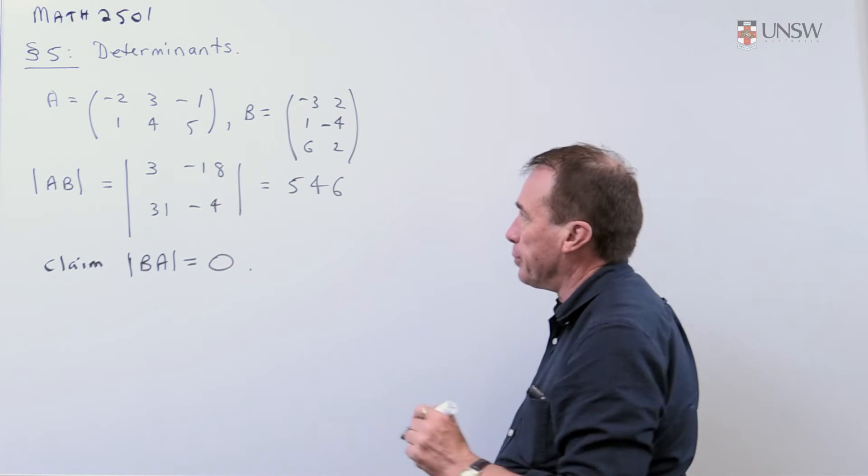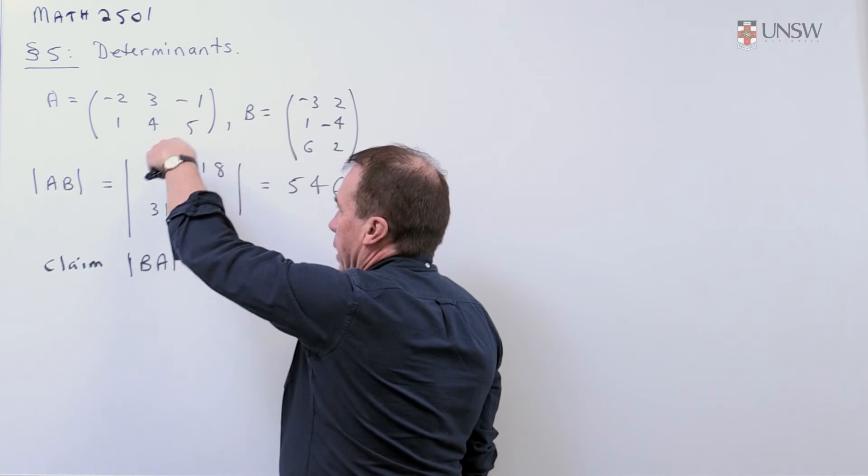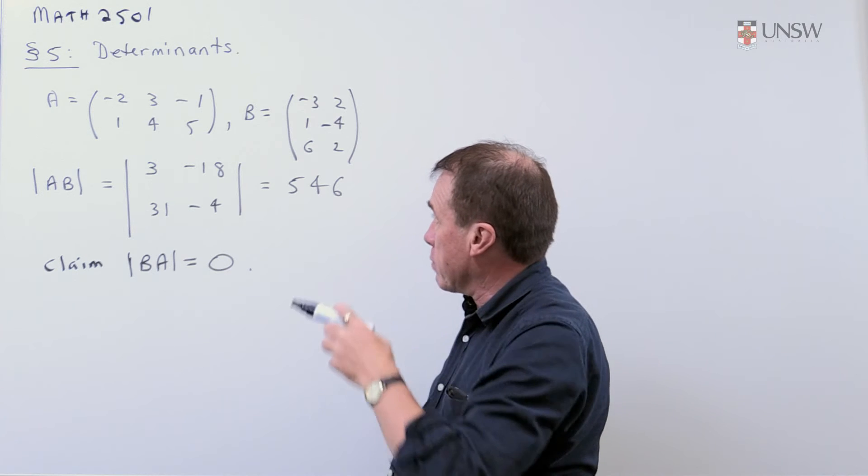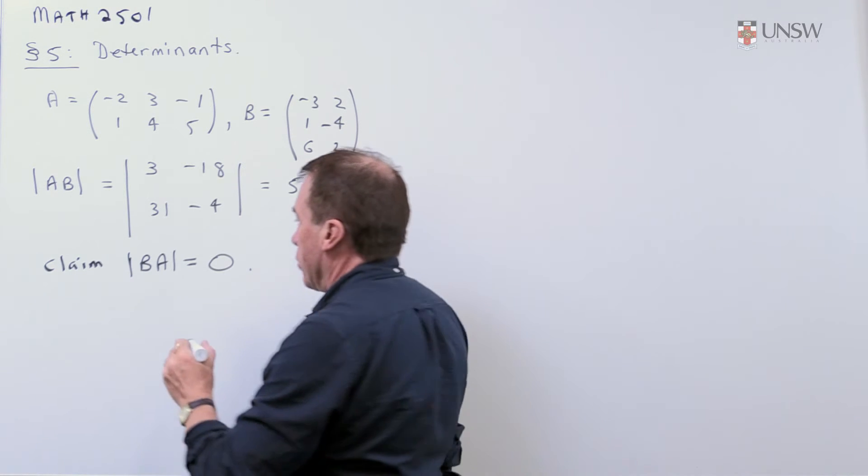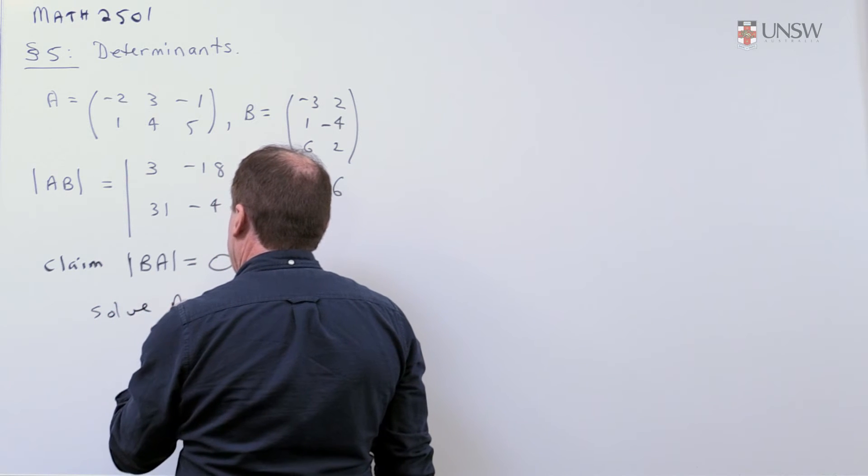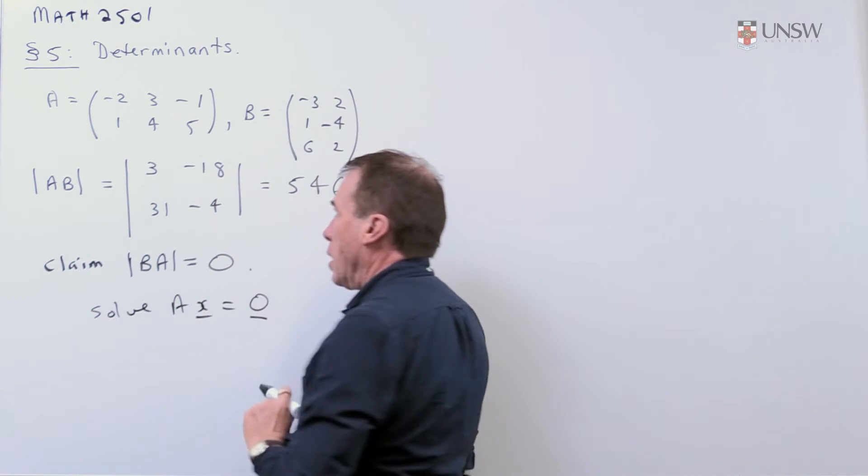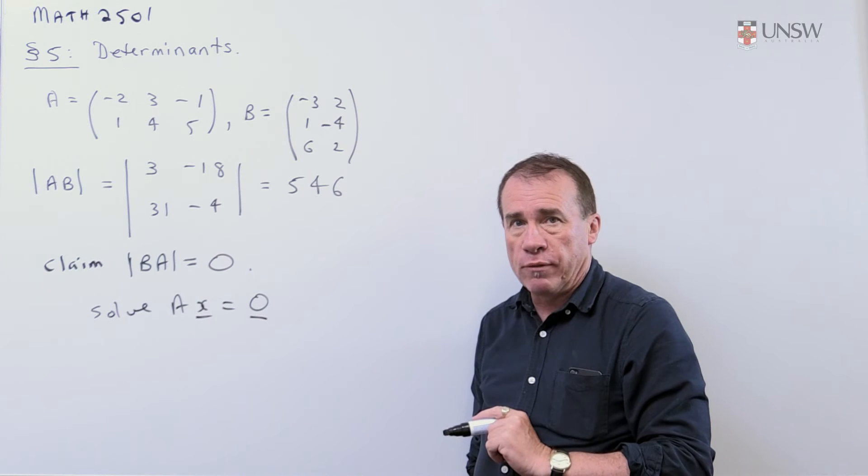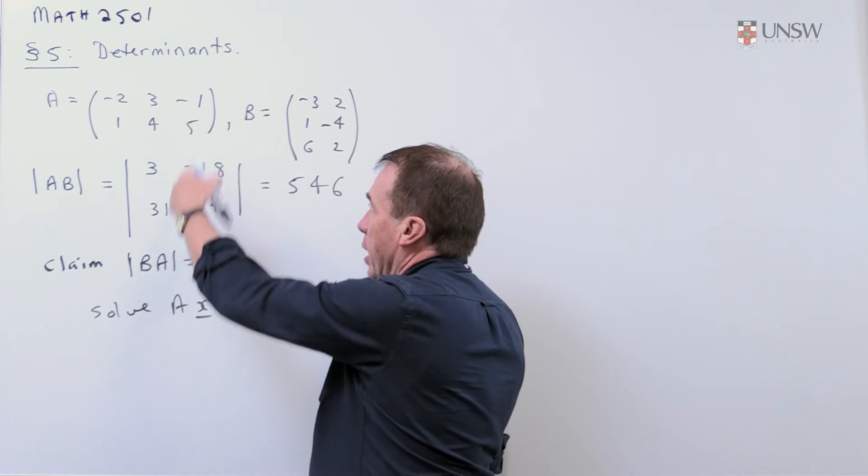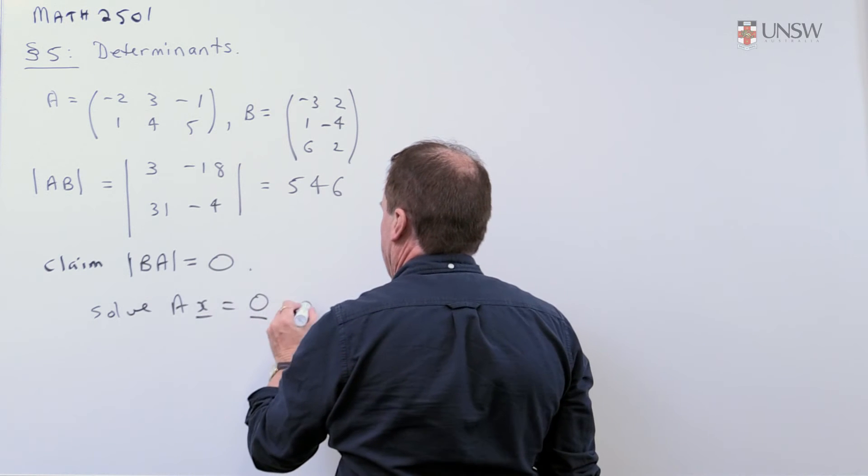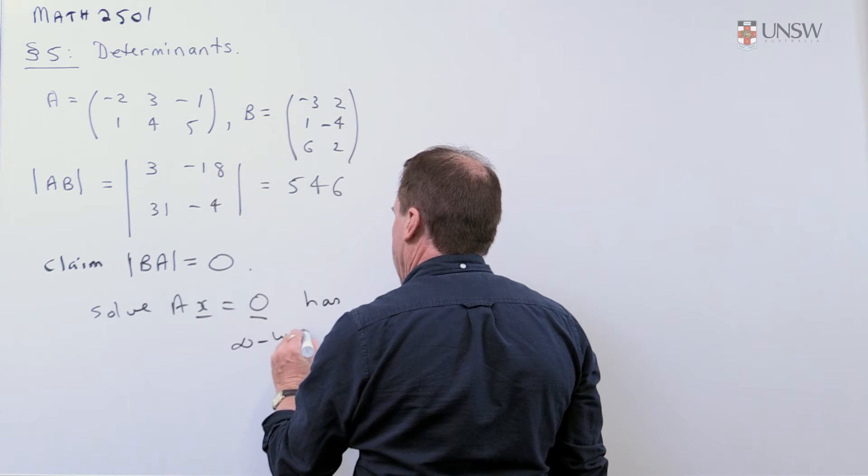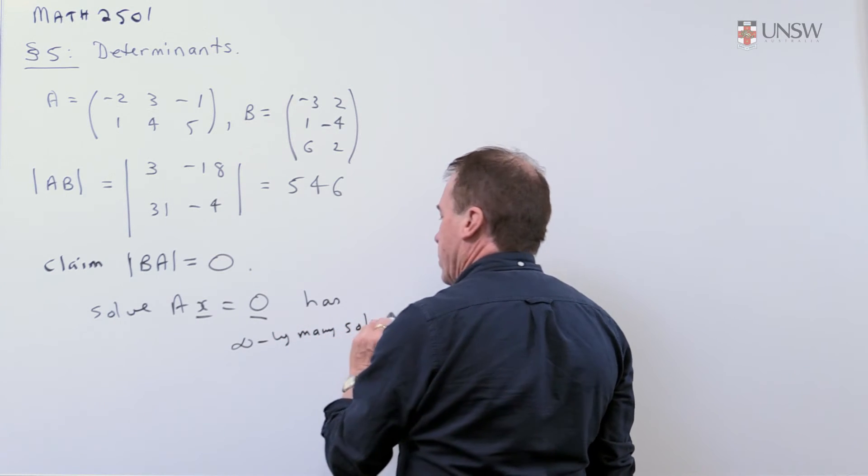And how do we see that? Well, if we look at this matrix A, it's got three columns and two rows. So, if I try and solve AX equals zero, then I know it's got infinitely many solutions. It's got at least one, put X to be zero, and by the size of it, you see it's going to have infinitely many solutions. So, this has infinitely many solutions.